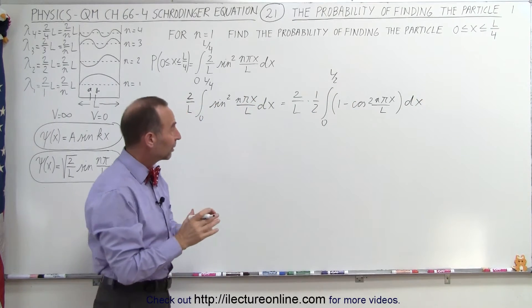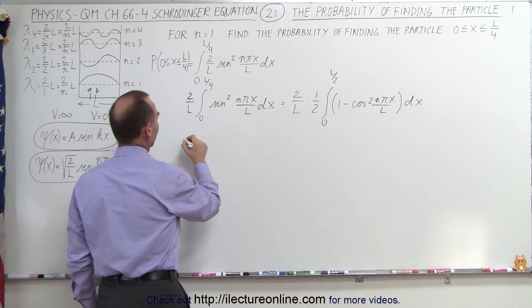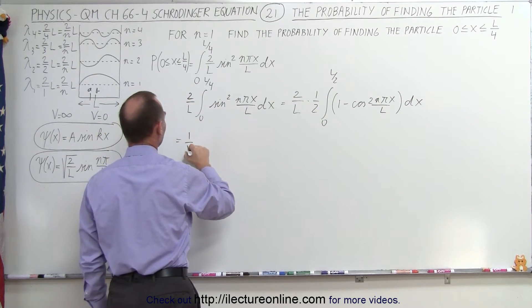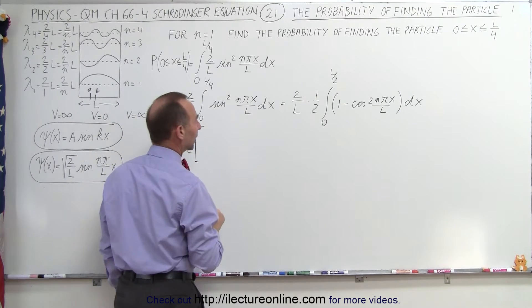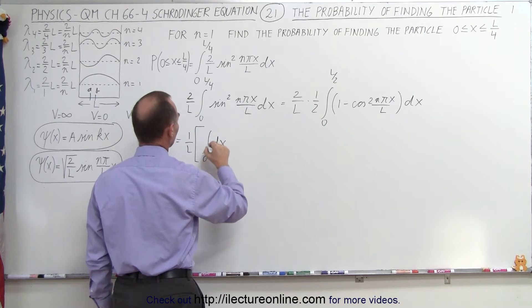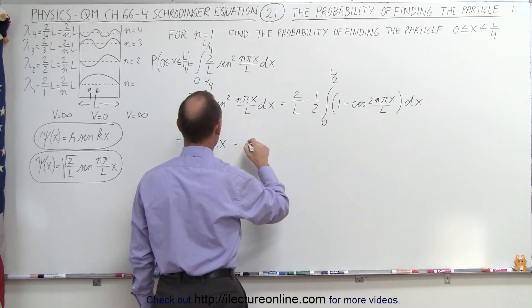So now we have the integral in a way that we can actually integrate it. We'll separate into two parts. So this is equal to, when we combine these two, we have 1 over L times, put a big bracket in, the first integral will simply be the integral over dx from 0 to L over 4, and then we have minus the second integral.